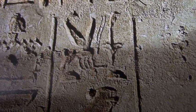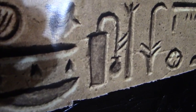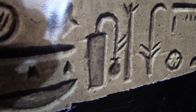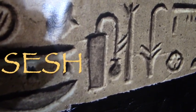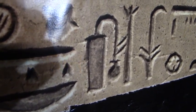This symbol of the bee next to the sedge plant is Netsut Biti — the king of upper and lower Egypt. The symbol of upraised arms joined together at the bottom is the Ka, and it symbolizes the spirit. This symbol is Sesh, and it means writings — the writing man, the scribe.